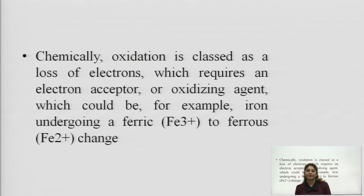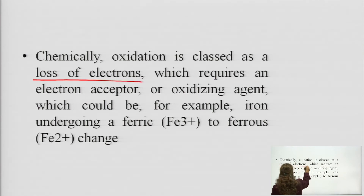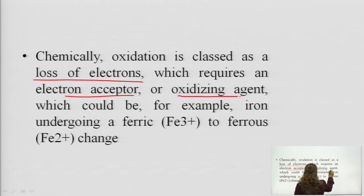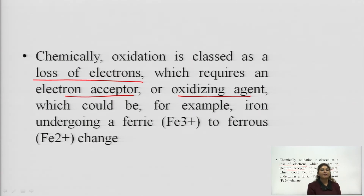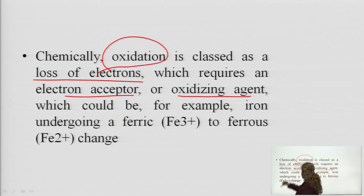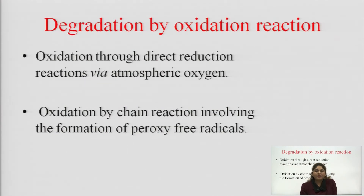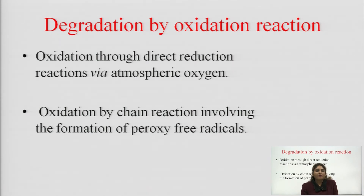Chemically, oxidation is classified as the loss of electrons, which requires an electron acceptor or oxidizing agent — for example, iron undergoing a change from Fe³⁺ to Fe²⁺ (ferrous). Loss of electron is known as oxidation. Regarding degradation by oxidation: oxidation occurs through direct reduction by atmospheric oxygen, which comes in direct contact with the drug and causes degradation. Oxidation by chain reaction involves the formation of peroxy free radicals.